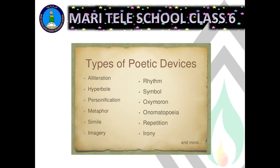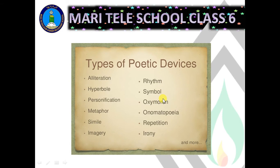There are different types of poetic devices like alliteration, hyperbole, personification, metaphor, simile, imagery, rhythm, symbol, oxymoron, onomatopoeia, repetition, and irony, and many more. But today we are just going to learn the basic or the most common ones.